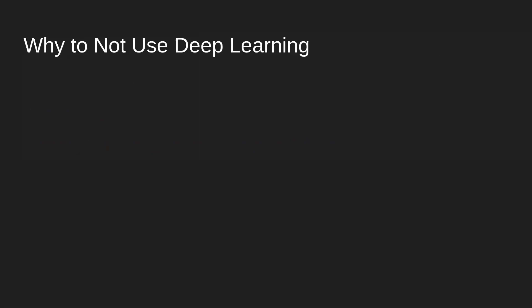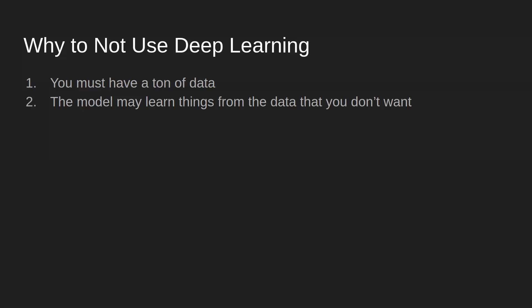Before talking about how great deep learning is, there are some caveats to be upfront about. First, you need a ton of data. Many studies work on a single study's worth of gene expression data or a couple of images, and deep learning won't work all that well in those cases. Deep learning models excel when you have thousands or millions of data points. Additionally, the model might learn things from the data that you don't want — shortcuts that cause your model to perform well on things you don't care about.